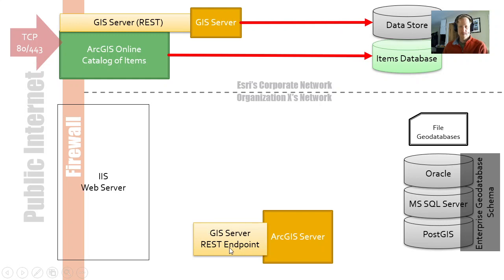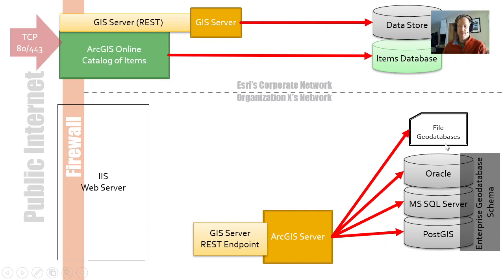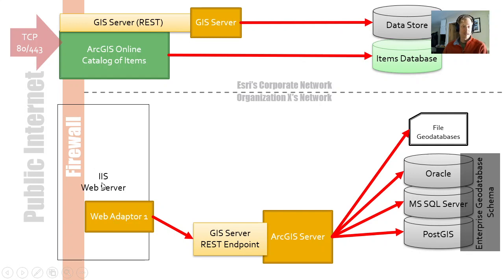This GIS server can access any one of the different resources, so we have a lot more flexibility than ArcGIS Online. We can configure one or more databases in our environment and publish services against the GIS server. To get at this server from the web, we need something called a web adapter — it's simply a way to access the URL, and you just install it in IIS. The GIS server doesn't install inside a web server; it has its own built in. The web adapter's job is simply to take a request from the internet and forward it to the correct location on the local computer.